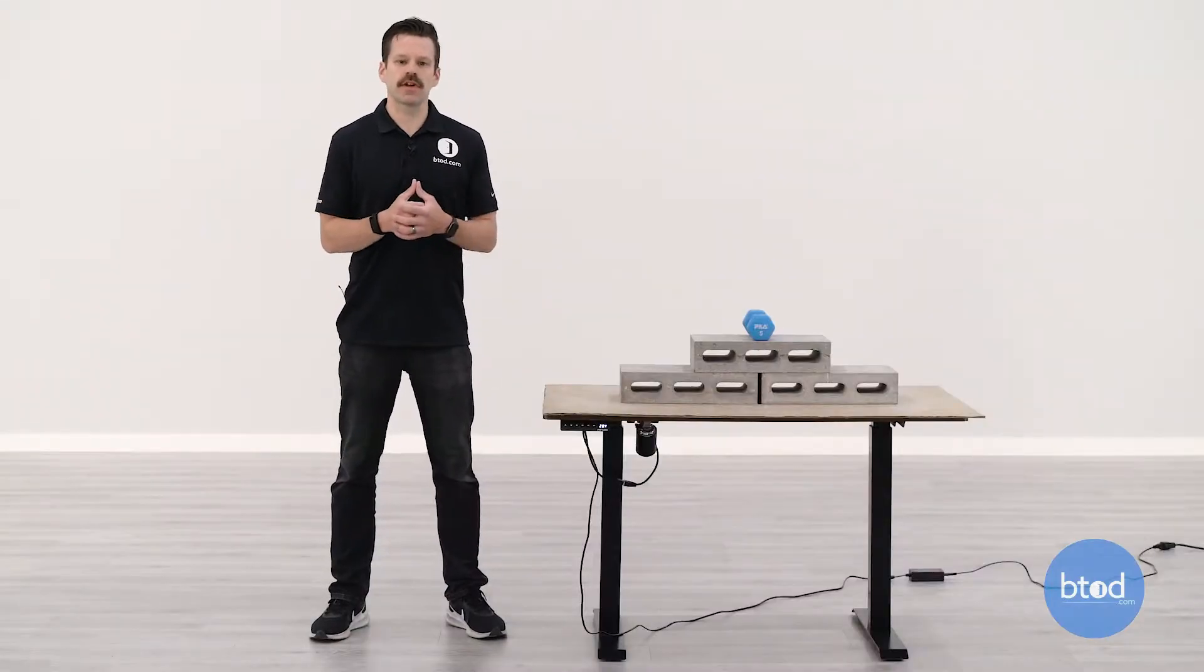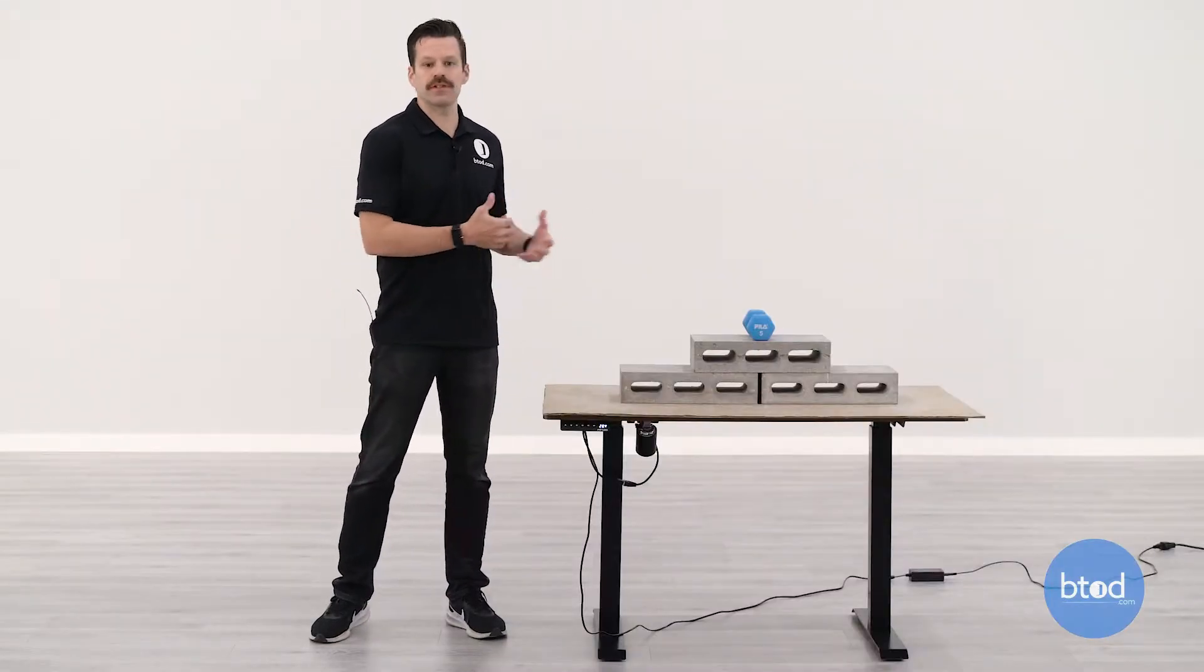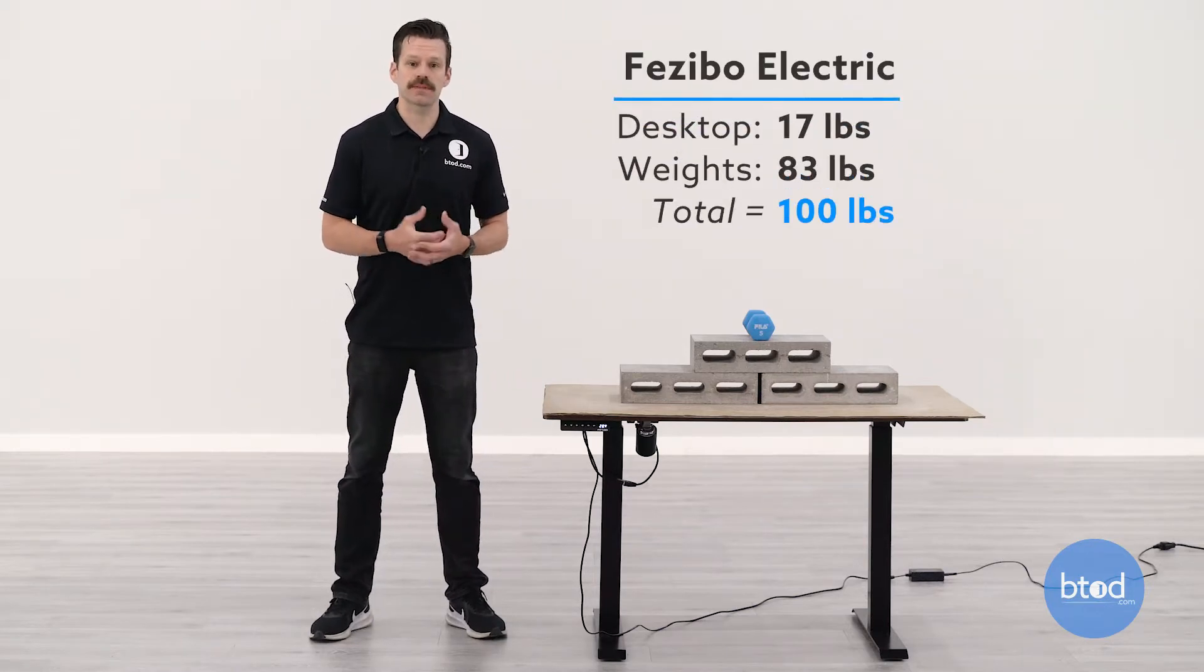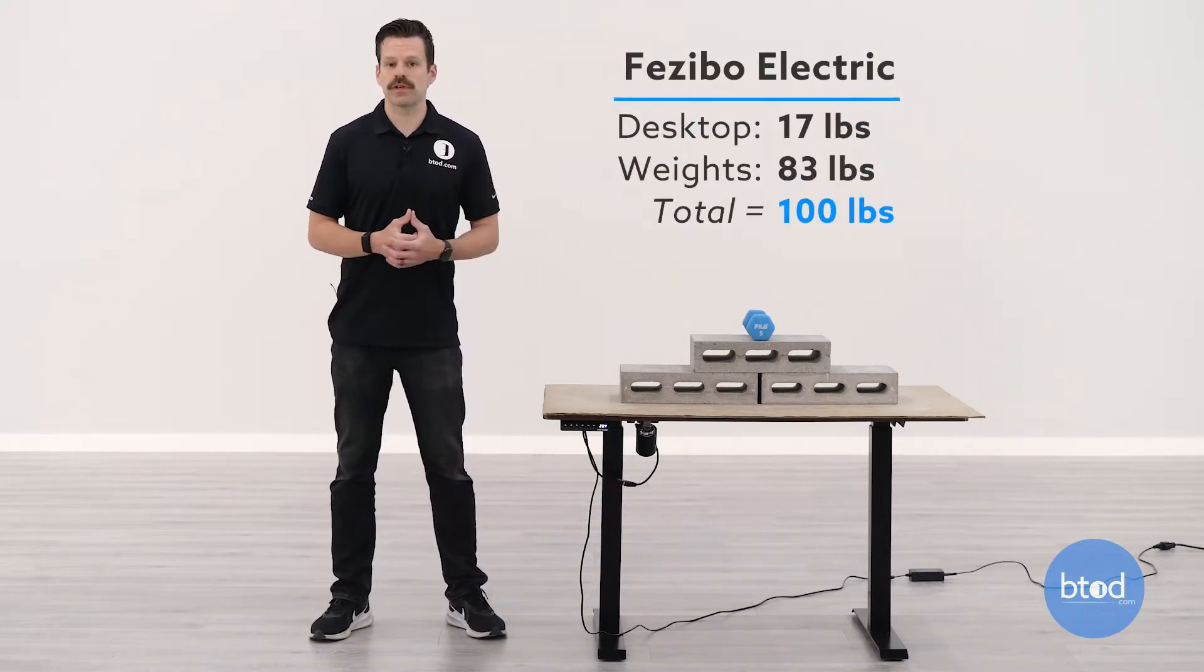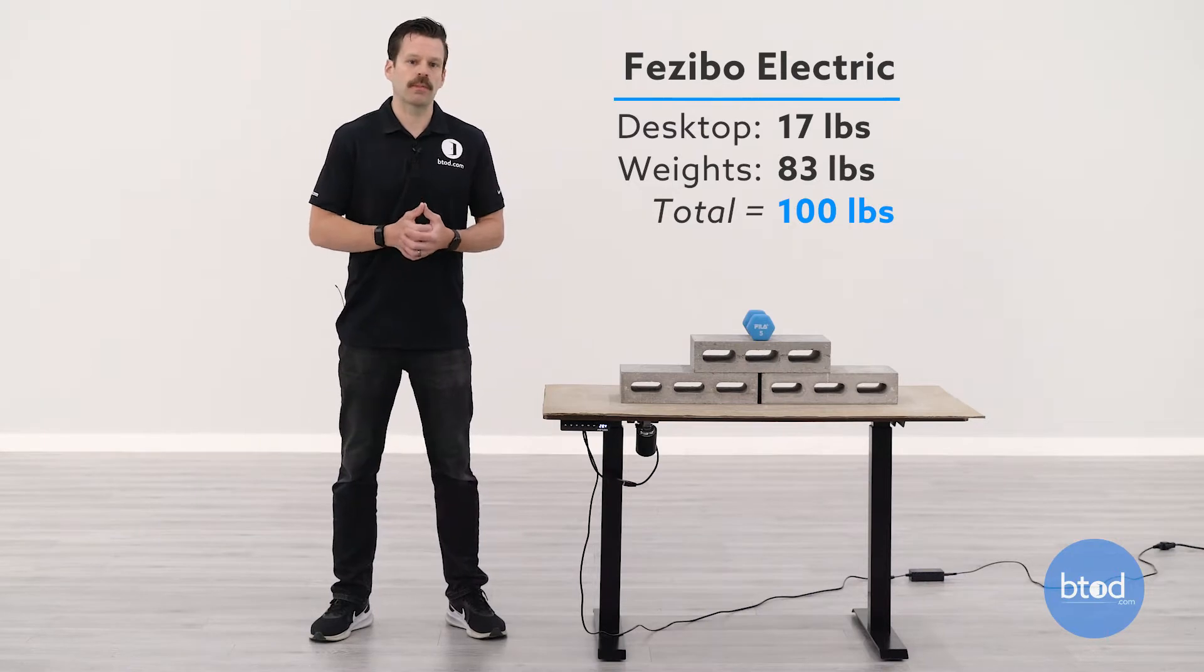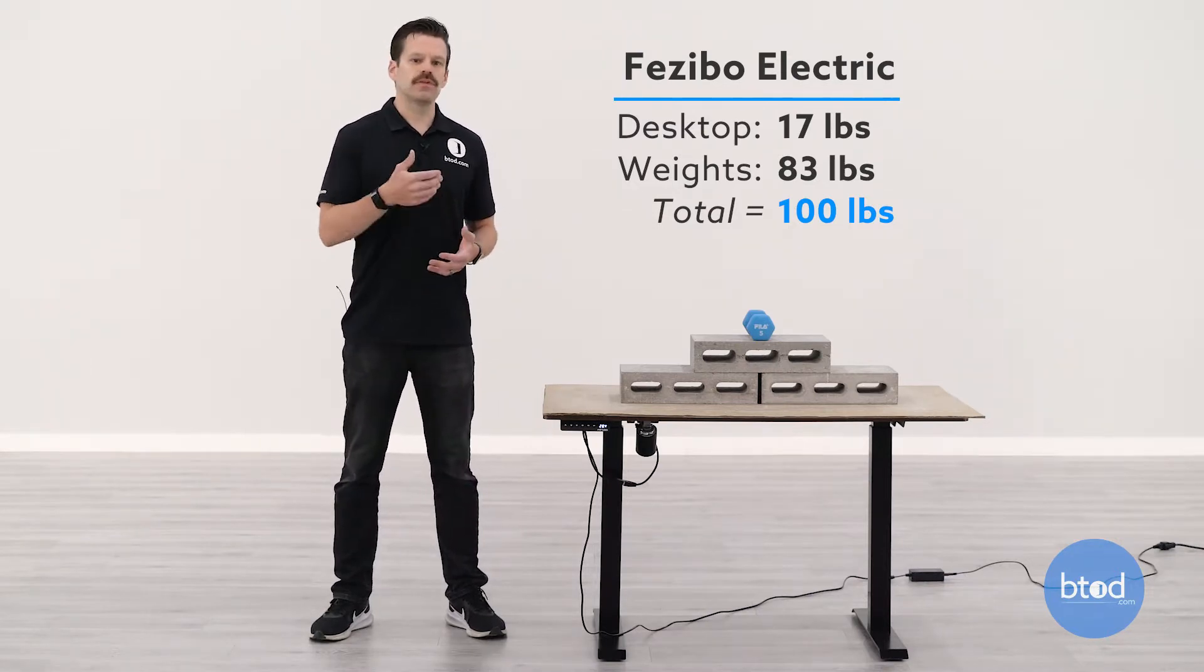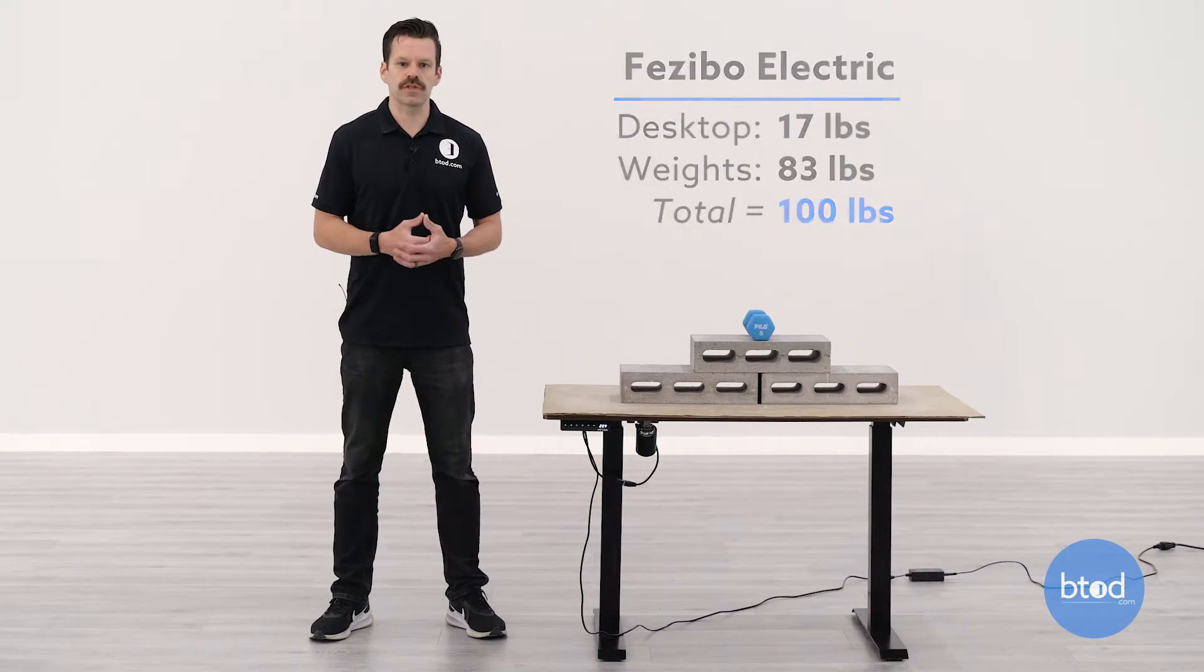Before we show you the first test, let's talk about a couple things. Number one is the setup. As you can see, we do have three center blocks plus a smaller dumbbell and the weight of the surface to hit that first 100 pound mark.